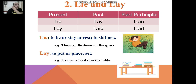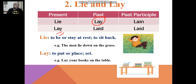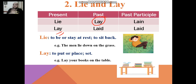Then we have 'to lie' and 'to lay.' The problem with these two is that the past of 'to lie' is 'lay' itself. So let's pay attention. 'To lie' means to rest in a place — when I lie in a place, I'm going to rest there. However, 'to lay' means to put. For example, 'lay the books on the shelf' or 'lay the books on the table,' which means put the books on the table or on the shelf.